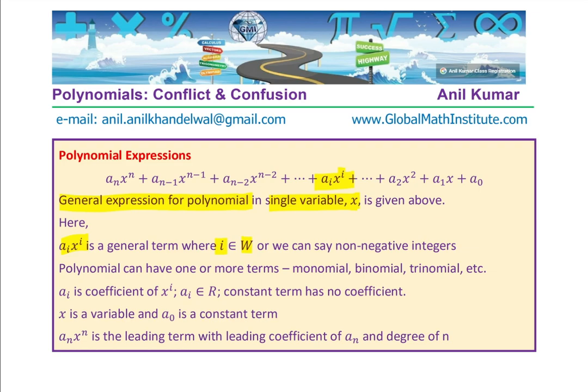The exponent of x could be any whole number including 0, 1, 2, 3, 4 and so on, or we can say non-negative integers. Polynomials can have one or more terms: monomial, binomial, trinomial etc. So I made that part clear, one or more.